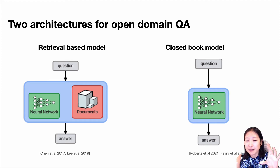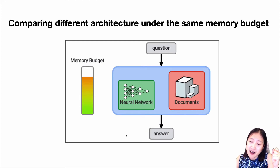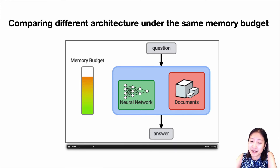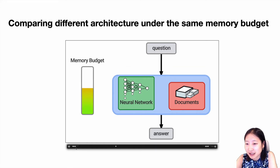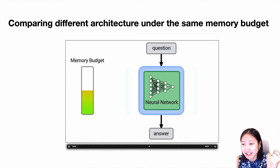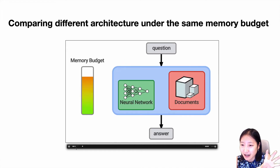Given the same memory constraints, models can use their memory budget to either build a bigger neural network or store more documents. You could use the memory budget to store neural network parameters, documents, or a combination of both.